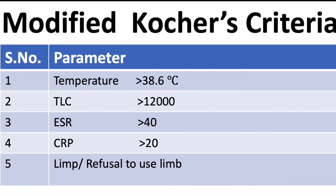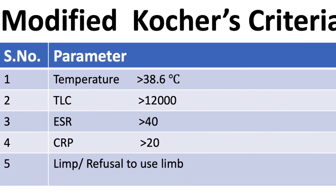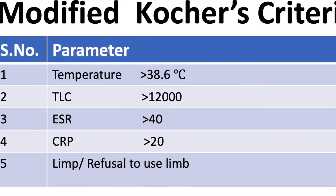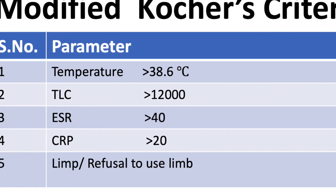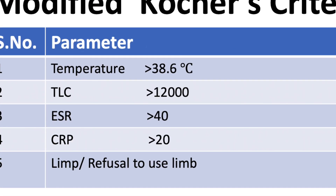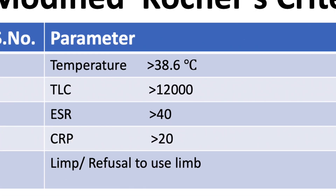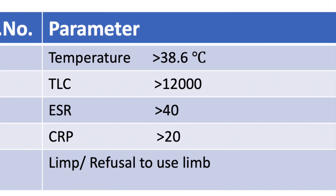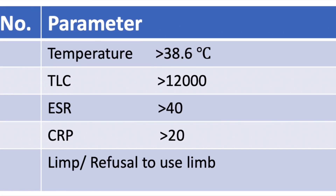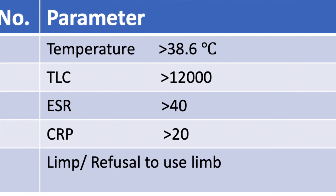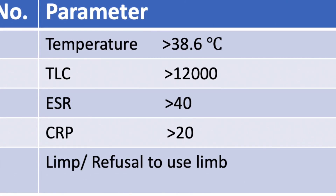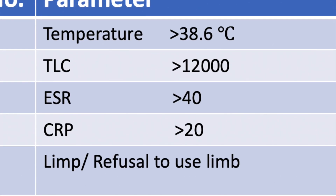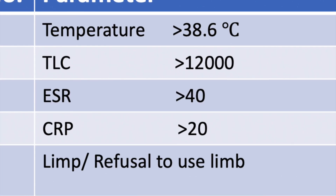If we look at the modified Kocher criteria which is used for diagnosing septic hip arthritis, only limp or refusal to use the limb will be our key factor in the case of neonatal sepsis or a patient admitted in an ICU with fever.